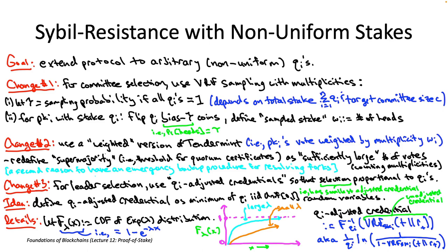The more complicated formula works due to a nice property of exponentially distributed random variables: the minimum of two exponentially distributed random variables is itself exponentially distributed with rate equal to the sum of the rates of the two. This is easiest to understand in terms of a Poisson process—the exponential distribution is the waiting time until the first firing of a Poisson process with rate lambda. The minimum of two exponential random variables is the waiting time until the first firing of one of two independent Poisson processes, so the combined process fires at rate lambda one plus lambda two, giving an exponential distribution with parameter equal to the sum.